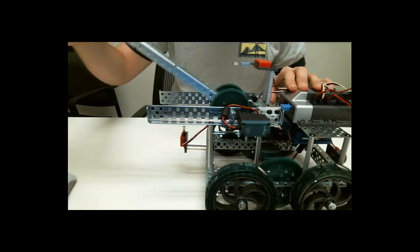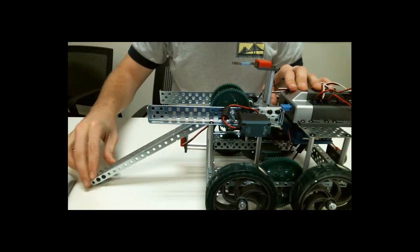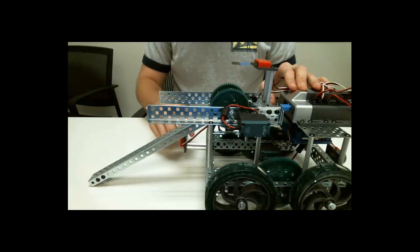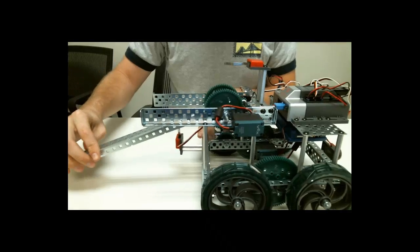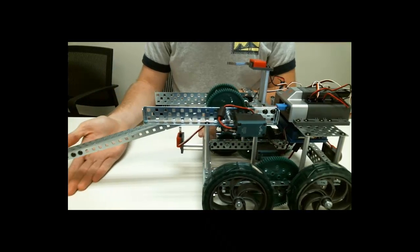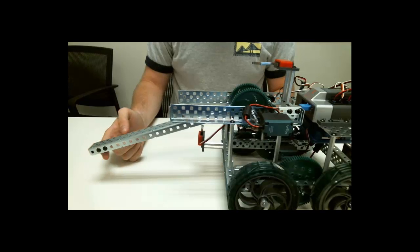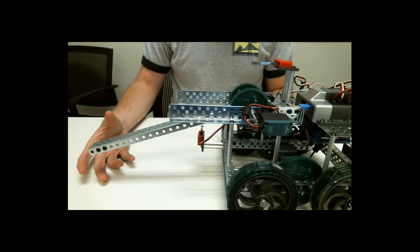And on the other side, if it comes down, you'll notice that it hits the limit switch on the bottom. Which will also keep the arm from scraping the ground. And that will be good because arms can get caught on those foam tiles very easily depending on what your end effector looks like.